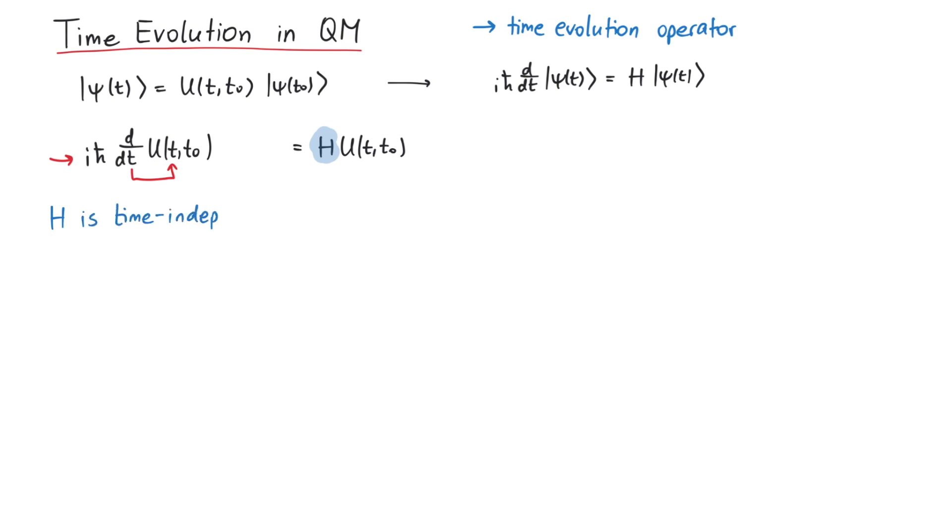If the Hamiltonian is time-independent, then this equation can be easily solved by using the exponential function, where the exponential function of an operator is defined via its Taylor series. You can check that this time-evolution operator fulfills the two relations we derived earlier.